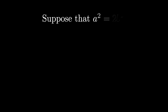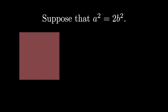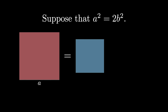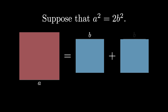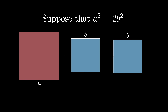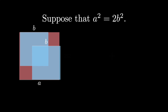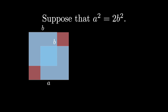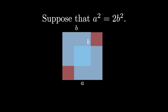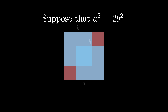Now let's suppose that the square root of 2 is rational, so that a squared equals 2b squared for two integers a and b. This means that we have an a by a square that equals two b by b squares added together. If we consider the a by a square as the room and the two b by b squares as the carpets, we get this diagram here.